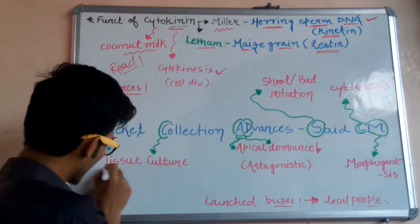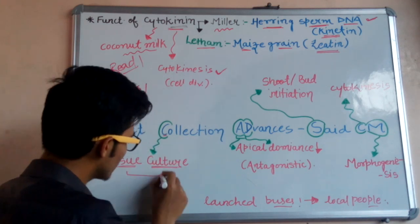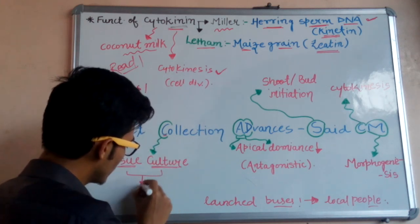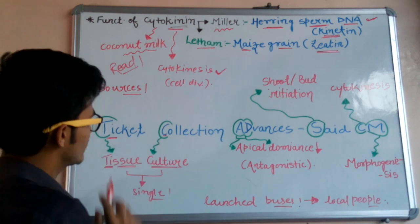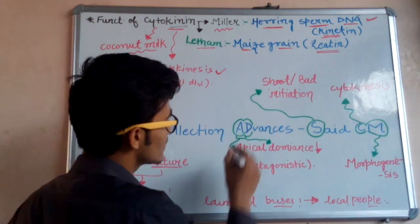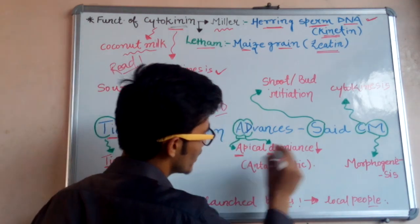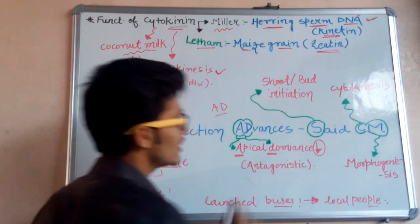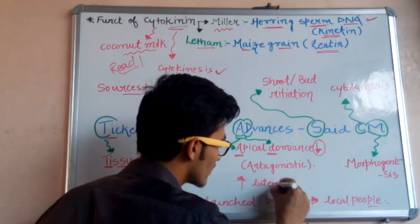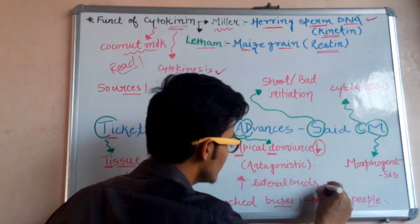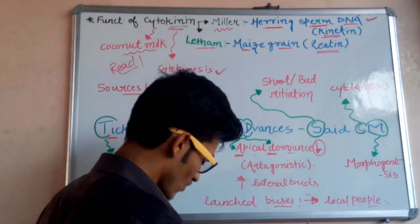'Ticket collection' simply means tissue culture, which is a single word. So cytokinin promotes tissue culture. Next, 'Advances' has two capital alphabets — A and D. 'Advances' means apical dominance — cytokinins decrease apical dominance, which means they promote the growth of lateral buds and decrease the dominance of the apical bud.